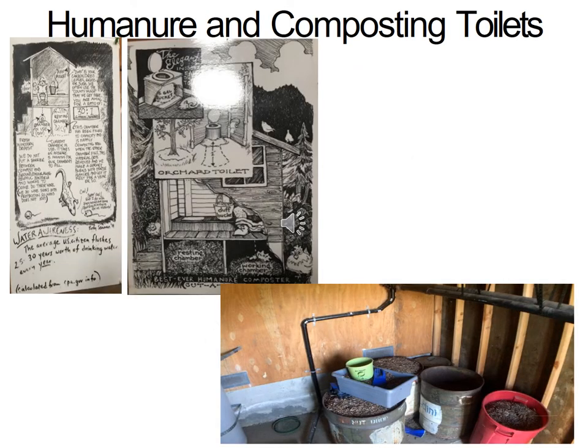Humanure and composting toilets can be used to compost human waste — first in an anaerobic process, then into an aerobic composting pile — and that can be used on fruit trees. It's not the best for vegetables since people are still cautious about having their waste near food crops, but it can be used on fruit trees or other perennials that are not near the veggie garden.